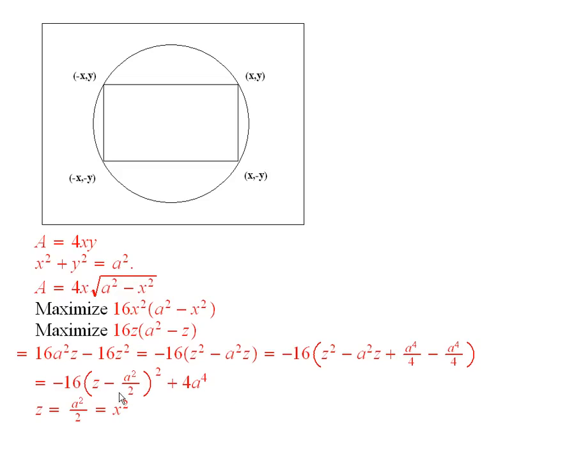So what are we going to do to make this as large as possible? To make this as large as possible, we should let z equal a squared over 2, because when we do that, this term becomes a 0. And if we don't do that, I'll be subtracting off something positive. So this is what z needs to equal.